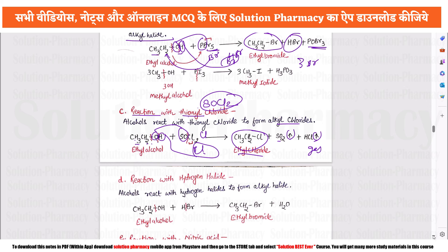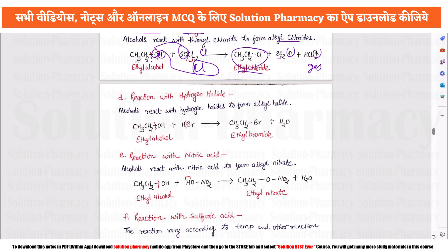Alcohols also react with hydrogen halides (HX), where X is any halogen. For example, ethyl alcohol reacts with HBr to give ethyl bromide, with water released as a byproduct.